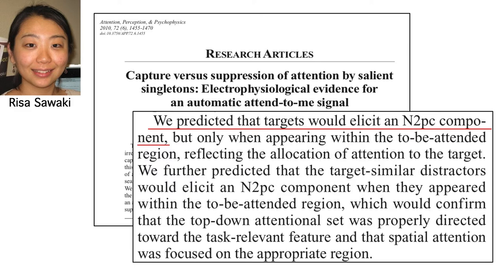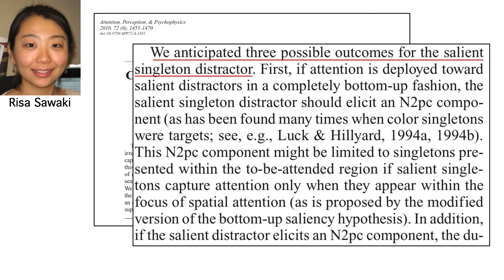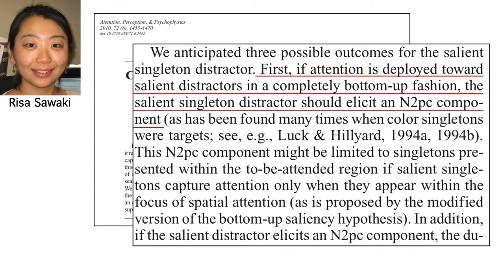So here's how the intro to experiment 1 ends. First, we predicted an N2PC for the target — the large A. That was a no-brainer. Then we considered three possible outcomes for the salient singleton distractor. We didn't predict the PD effect, so we just listed three possibilities. One was that the singleton would produce an N2PC, which would have indicated that it automatically captured attention.